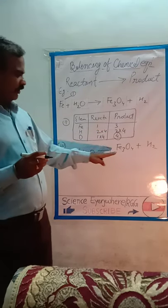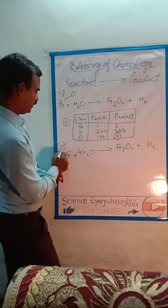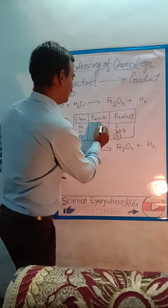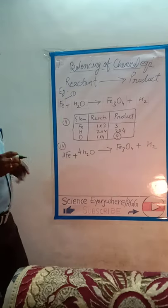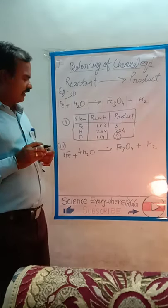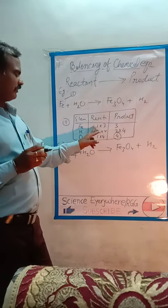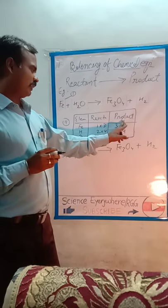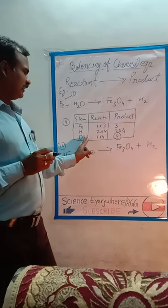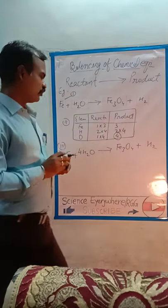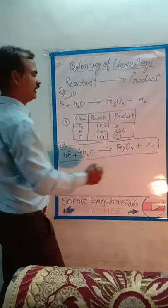There are three atoms of iron on the product side, so we multiply iron by three on the reactant side. Now check: three iron on the reactant side, three on the product side; eight hydrogen on both sides; four oxygen on both sides. The chemical equation is now balanced.